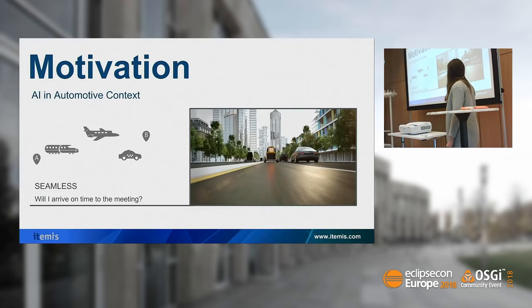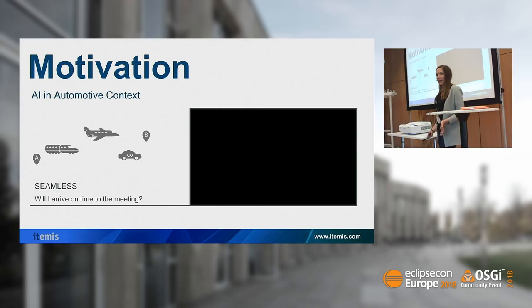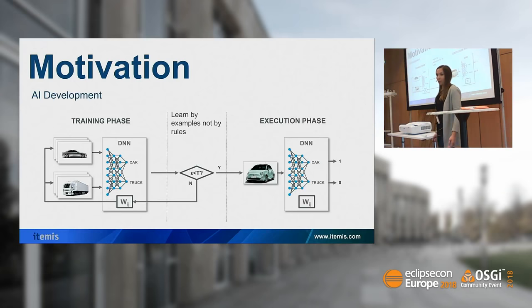These are a few use cases about the use of artificial intelligence in the automotive domain. Now going to the development of artificial intelligence or deep learning — deep learning is a completely new paradigm of software development, because instead of learning by rules, you learn by example.